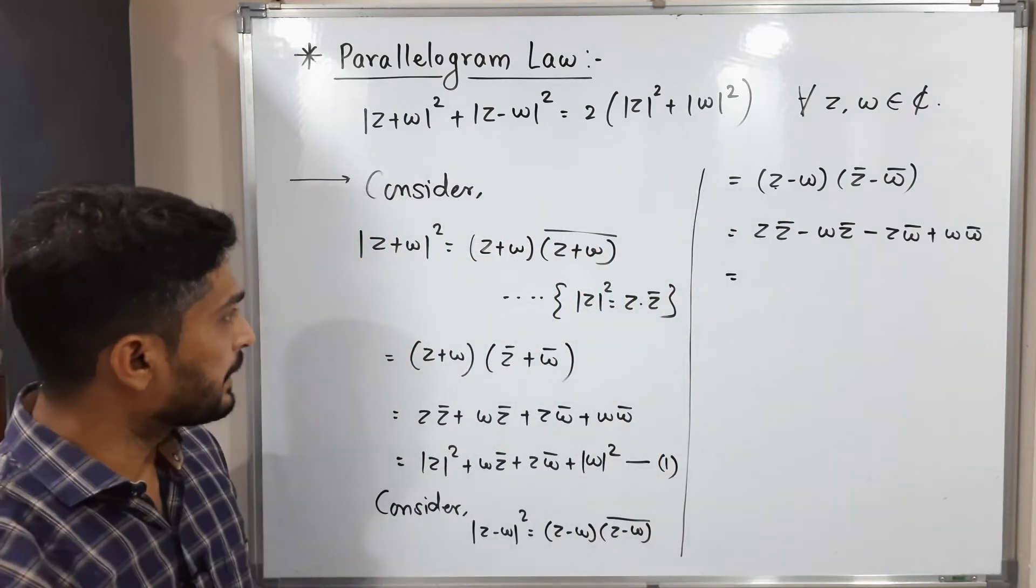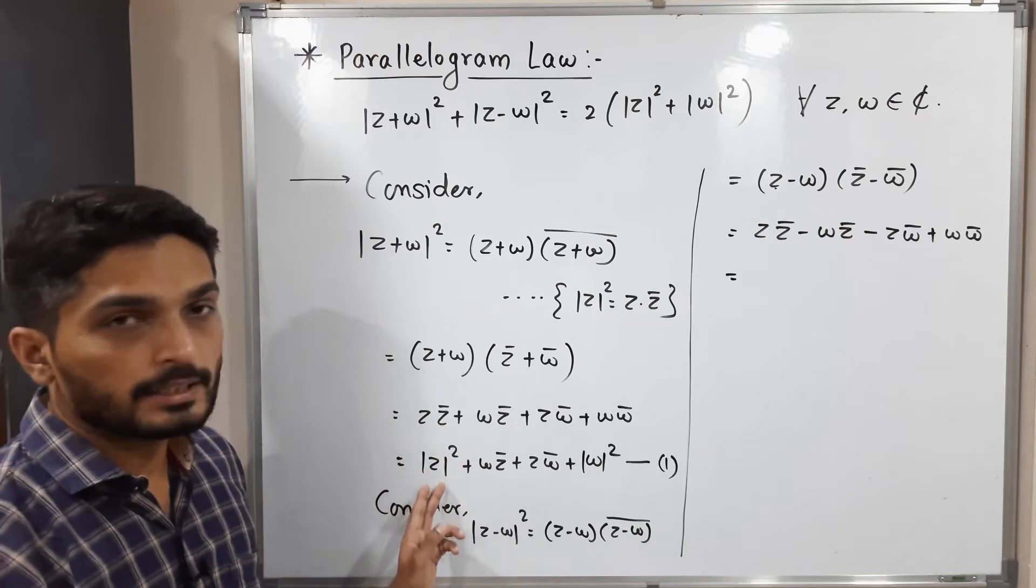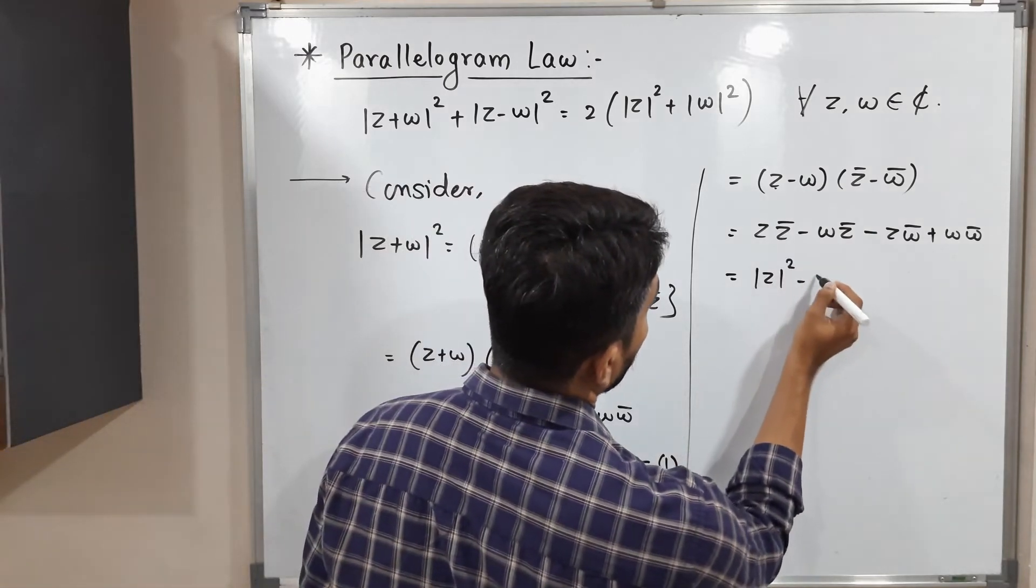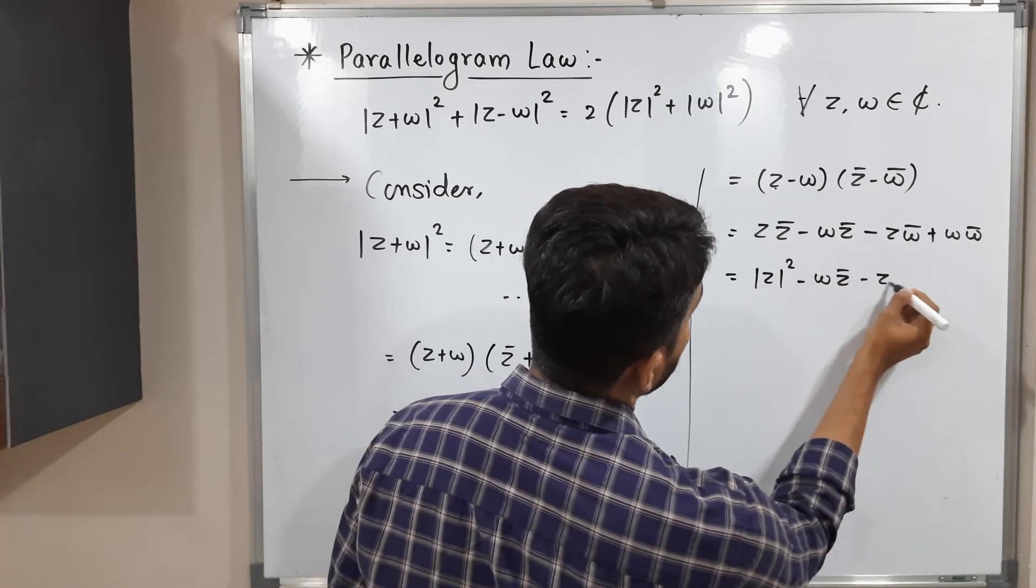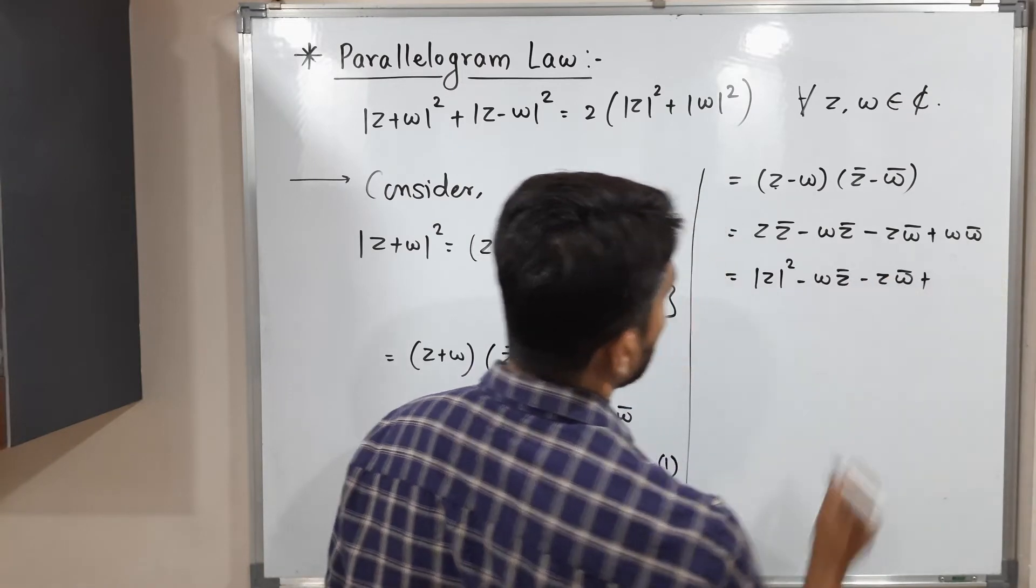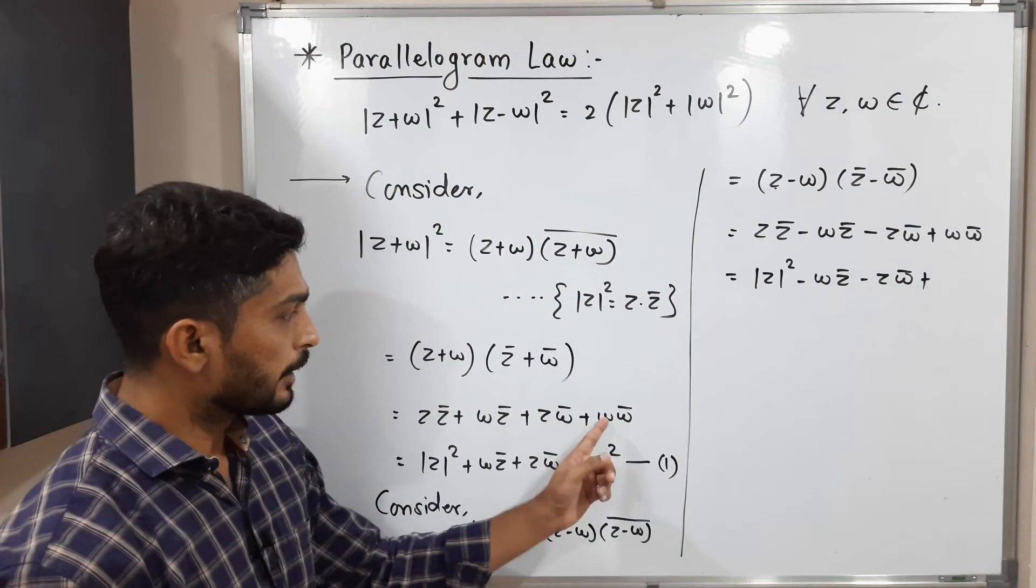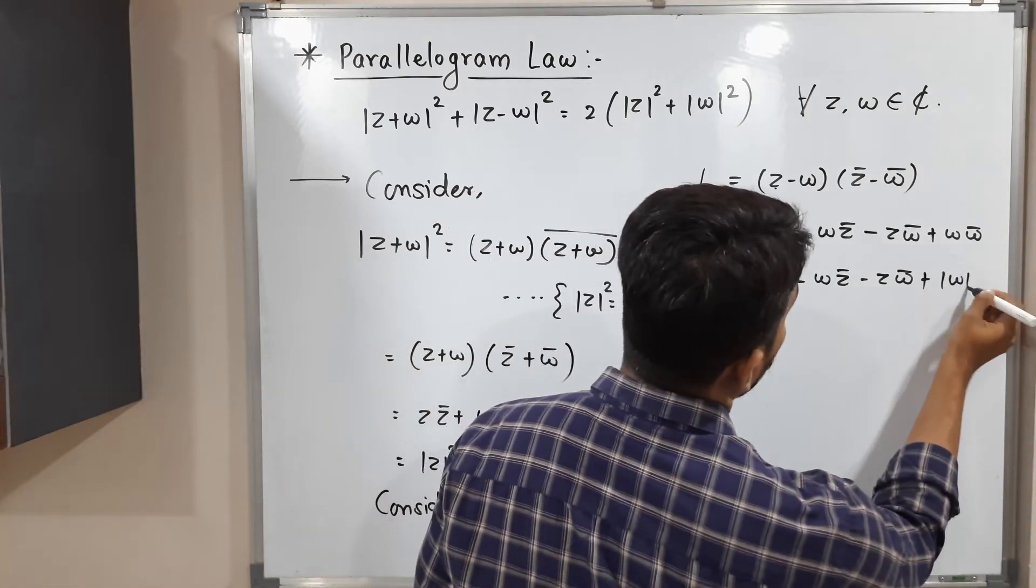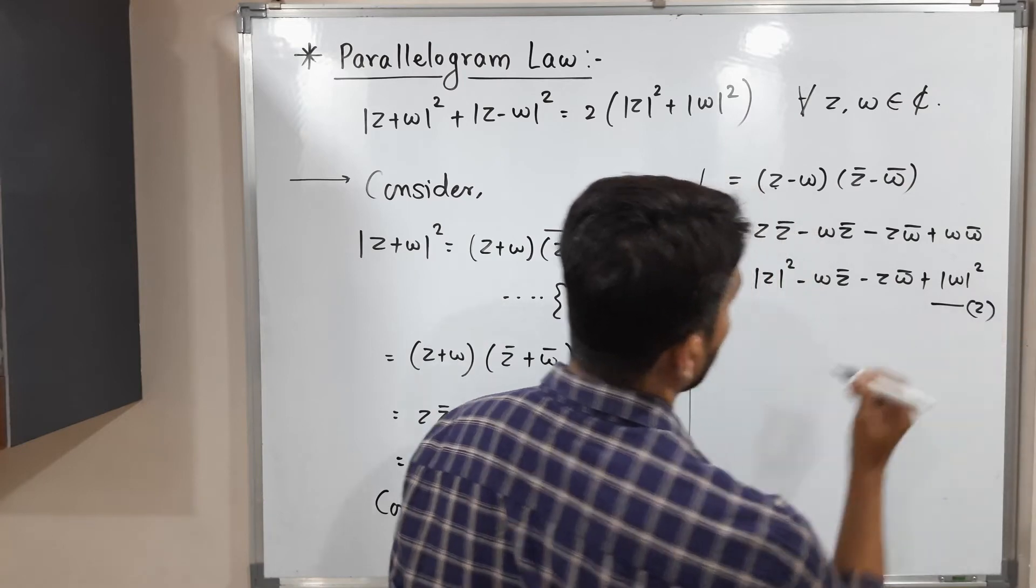Same thing I will repeat here. z into z bar is nothing but mod z square. Mod z square minus w z bar minus z w bar plus w into w bar. w into w bar is nothing but mod w square. So let me write mod w square. This is our equation number two.